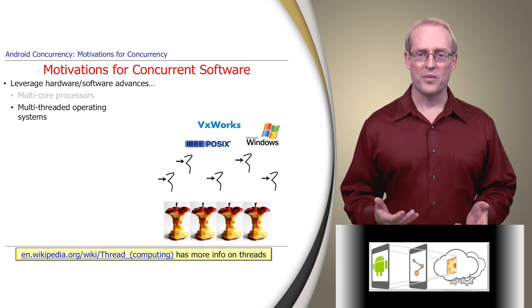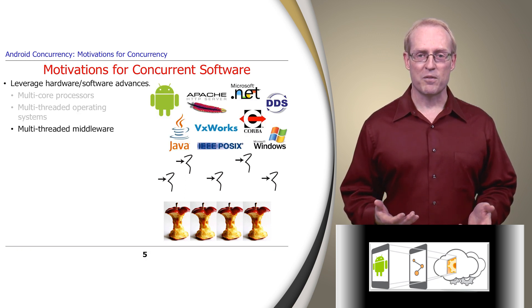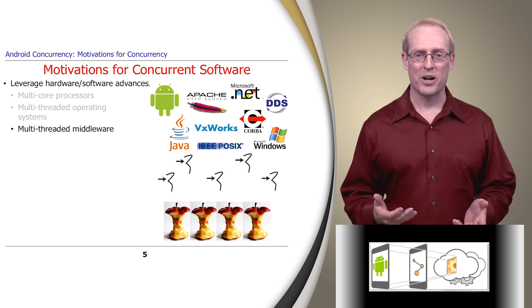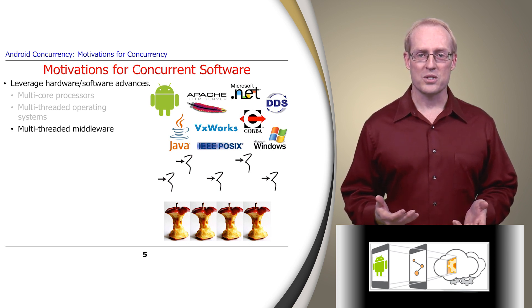Likewise, middleware such as Java Virtual Machines, web servers, Android, .NET, DDS, and CORBA can take advantage of multiple cores, as described at this link.